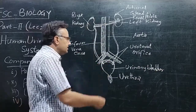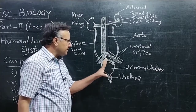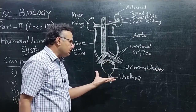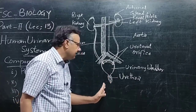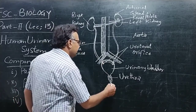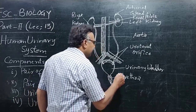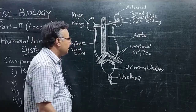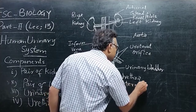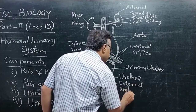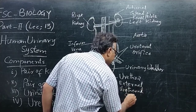تو دونوں طرف کی ureters urinary bladder میں آکر open ہو رہی ہیں۔ یہاں پہ urine اکٹھا ہوتا ہے — temporarily stored ہوتا ہے — اور پھر urethra کے ذریعے، جو کہ ایک muscular tubular structure ہے، pass out ہوتا ہے۔ اس کے terminal part پر بھی ایک ring of muscle ہے جس کو external urethral orifice کہا جاتا ہے۔